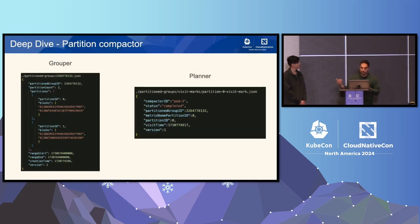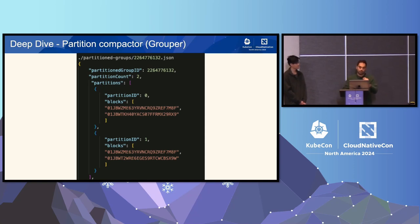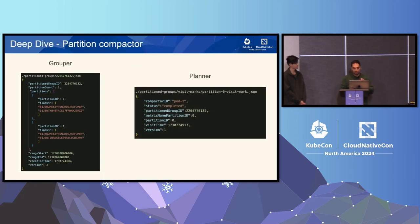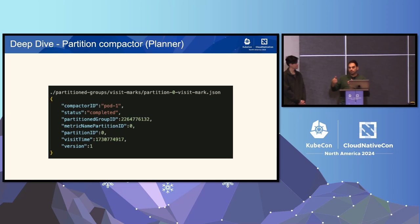We also needed to change how the grouper and planner work. The grouper previously used only the min and max time range, and now it also uses the new partition information to decide which blocks can go together. For example, with a partition count of two, you have partition ID zero and one, and different blocks can go into different partition IDs. The planner also changed because of the visit marker — the old visit marker blocked the whole block, but now we want multiple compactions on the same block for different partitions. So we moved the visit marker from the block level to the partition group level, allowing us to track which partition groups and partition IDs are being compacted.